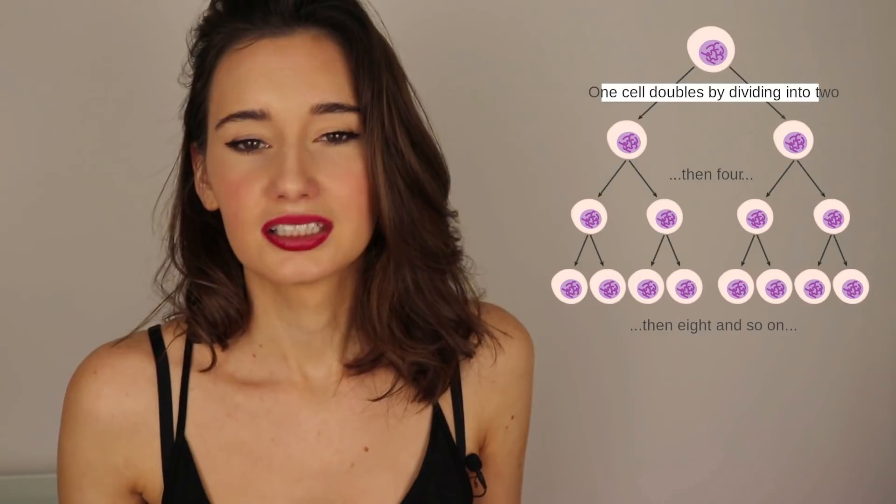Cancer develops when normal cells become abnormal in the sense that they divide in an uncontrolled manner. All cancers begin in cells. Our bodies are made up of more than a hundred million million cells, and there are more than 200 different types of cancers that can develop.